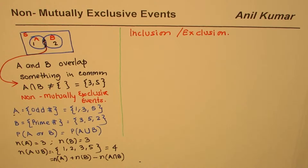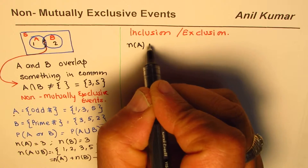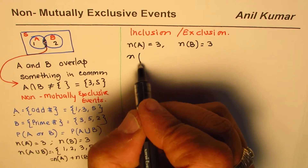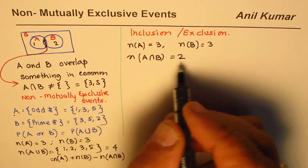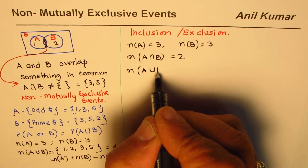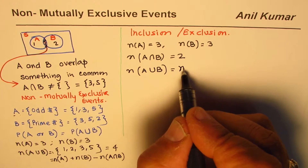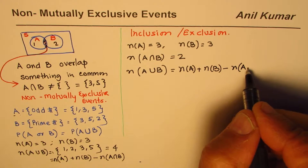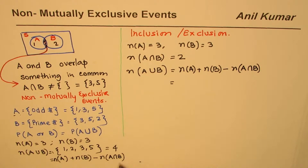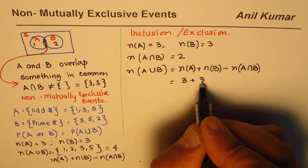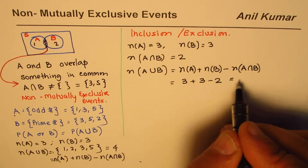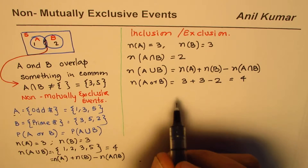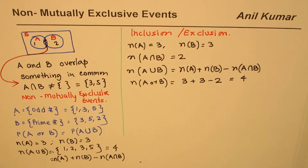So applying the principle: the number of elements in A is 3, the number of elements in B is 3, and the number of elements common to both A and B is 2. Therefore the number of elements in A union B is 3 plus 3 minus 2, which gives us 6 minus 2 equals 4. That is how we get the count of elements in A or B.